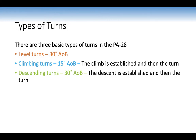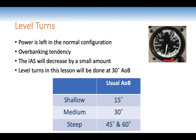There are three types of turns in the PA28: level turns at 30 degrees angle of bank; climbing turns at 15 degrees angle of bank with the climb established first, then the turn; and descending turns at 30 degrees angle of bank with the descent established first, then the turn. For level turns, power is left in normal configuration. There is an overbanking tendency, and indicated airspeed will decrease by a small amount — acceptable, no action needed.